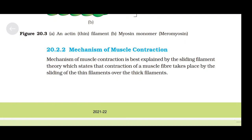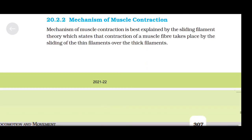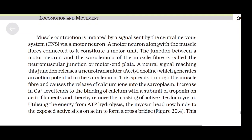Mechanism of muscle contraction. The mechanism of muscle contraction is best explained by the sliding filament theory, which states that contraction of a muscle fiber takes place by sliding of thin filaments over the thick filaments. Muscle contraction is initiated by a signal from the central nervous system (CNS) via a motor neuron. A motor neuron along with the muscle fibers connected to it constitutes a motor unit. The junction between a motor neuron and the sarcolemma of the muscle fiber is called the neuromuscular junction or motor end plate.